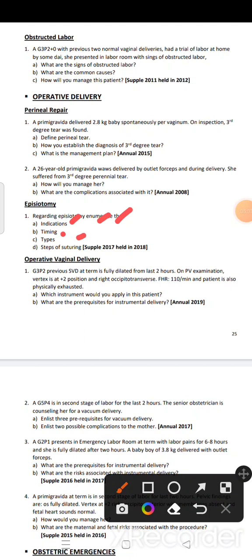The timing is the second stage of labor. Types include medial type and mediolateral. Structures involved are the vaginal wall, then the perineal muscles.